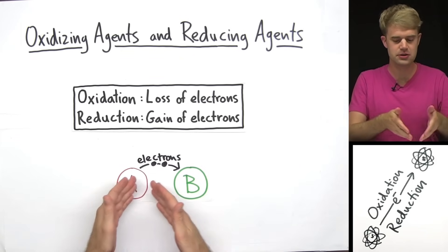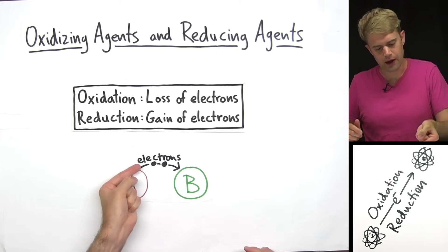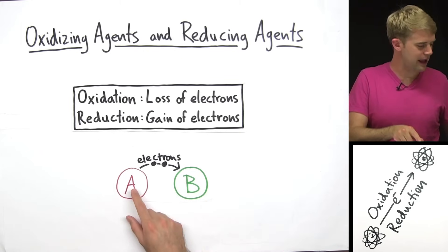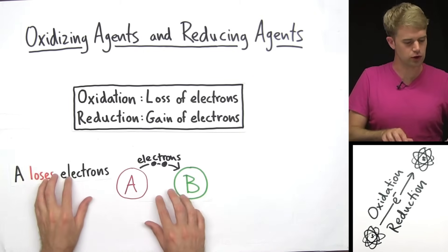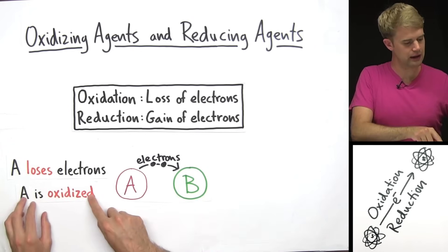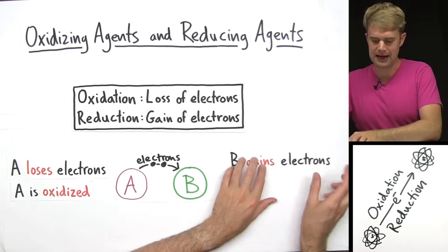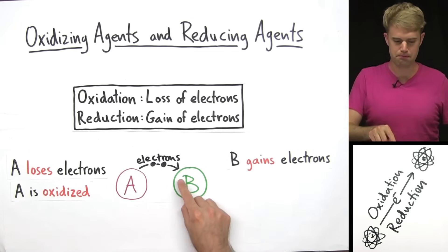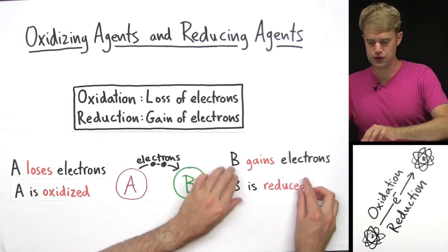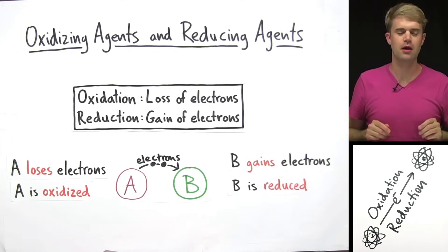Maybe they're atoms, maybe they're compounds, and there are electrons moving from A to B. So A here is losing electrons, which means that A is being oxidized. B over here, B is gaining electrons, which means that B is being reduced.